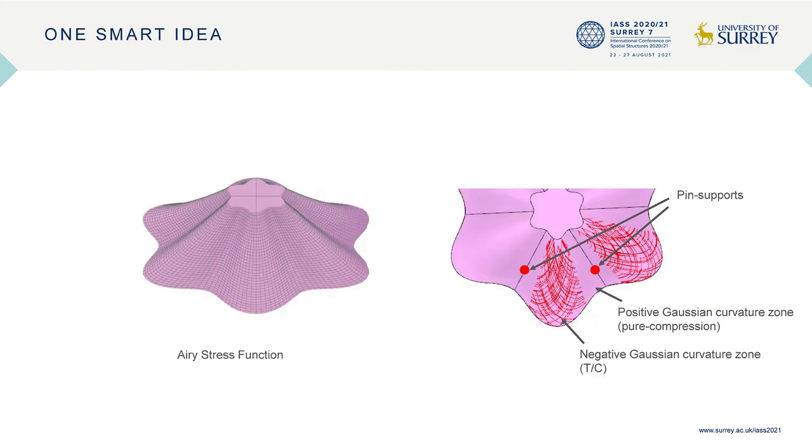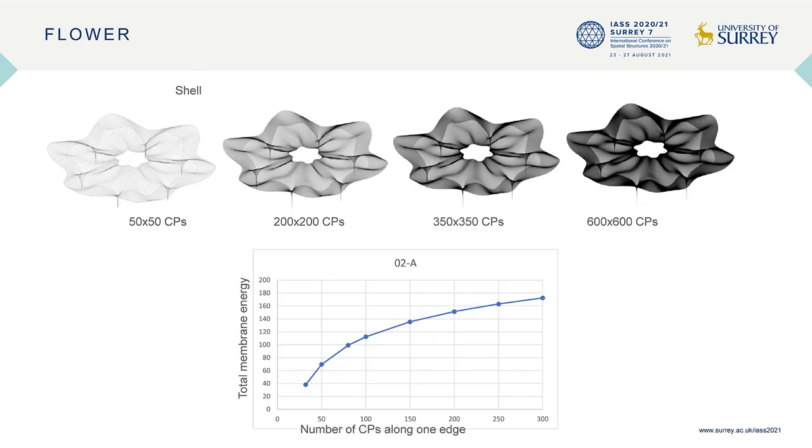So, we tested one simple idea. We inserted parts of positive Gaussian curvature zones between the tension compression mix zones and put the support there. This is because this configuration makes a lot of sense from a structure design point of view. This is the solution we obtained.